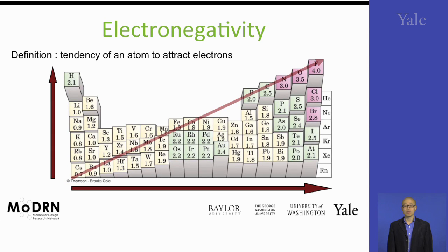The first electronic property we can talk about is electronegativity. It's defined as the tendency of an atom to hold electrons to themselves. Therefore, the smaller the radius of an atom, the higher the tendency for it to hold its electrons, and the higher the electronegativity. So this tendency is expected to go in the opposite direction as atomic radii.